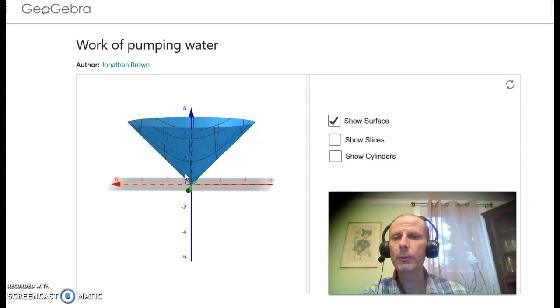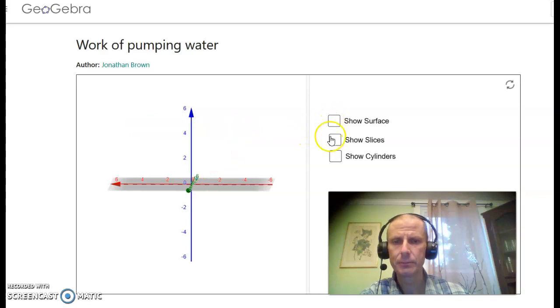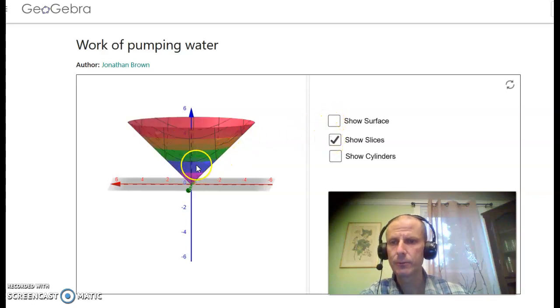In this type of problem, the way we're going to solve it is we are going to split up the interval over which we have water, so it's a vertical interval here, into subintervals. For example, we can take the entire basin and split it up into five subintervals, like so. The idea now being is that everything in each layer is at about the same height, and therefore has to be pumped out about the same distance.